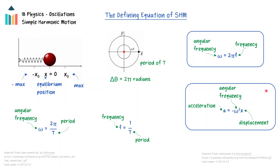This formula demonstrates the conditions for simple harmonic motion, as it shows the acceleration is directly proportional to the displacement, with omega squared being the constant of proportionality. The negative sign in the formula demonstrates that the acceleration and the displacement are in opposite directions, so that the acceleration is pointing towards the equilibrium point. This formula can also be expressed in terms of the net force by using Newton's second law.